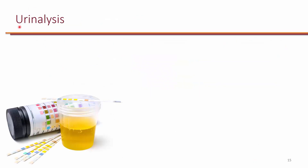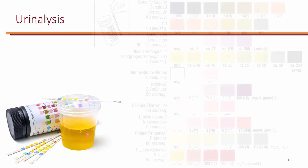Urinalysis is the easiest, cheapest, and most commonly done test in the hospital. Once the urine sample comes to the micro lab, they use dipstick strips for urinalysis. These strips have different sections, and they're simply dipped into the urine. As the color of different sections changes, results are interpreted based on color. This is immediate — you get the results the same day the urine sample is sent to the micro lab.